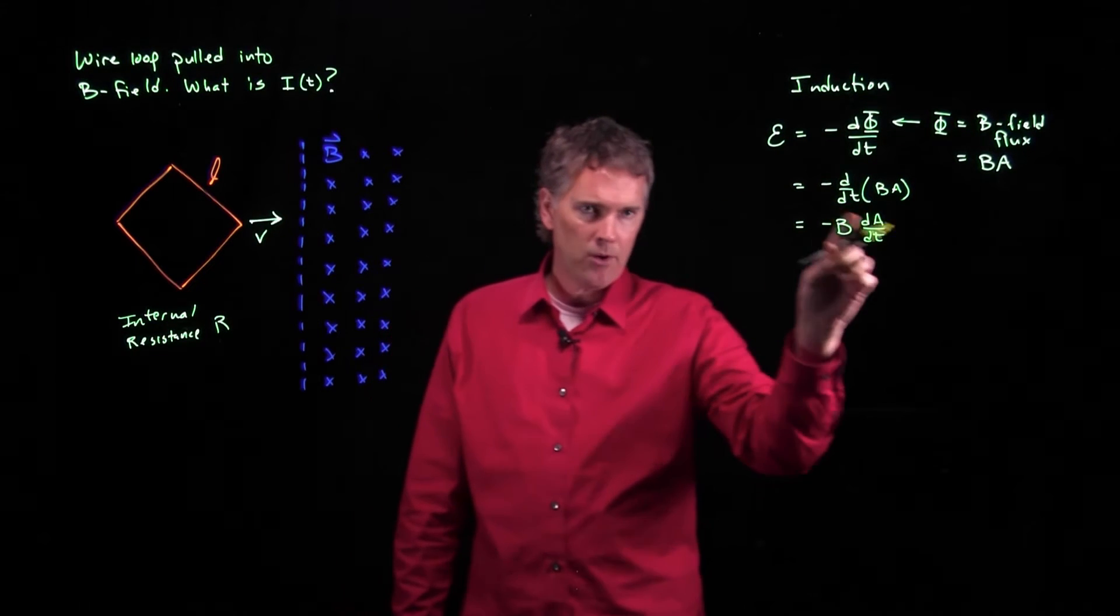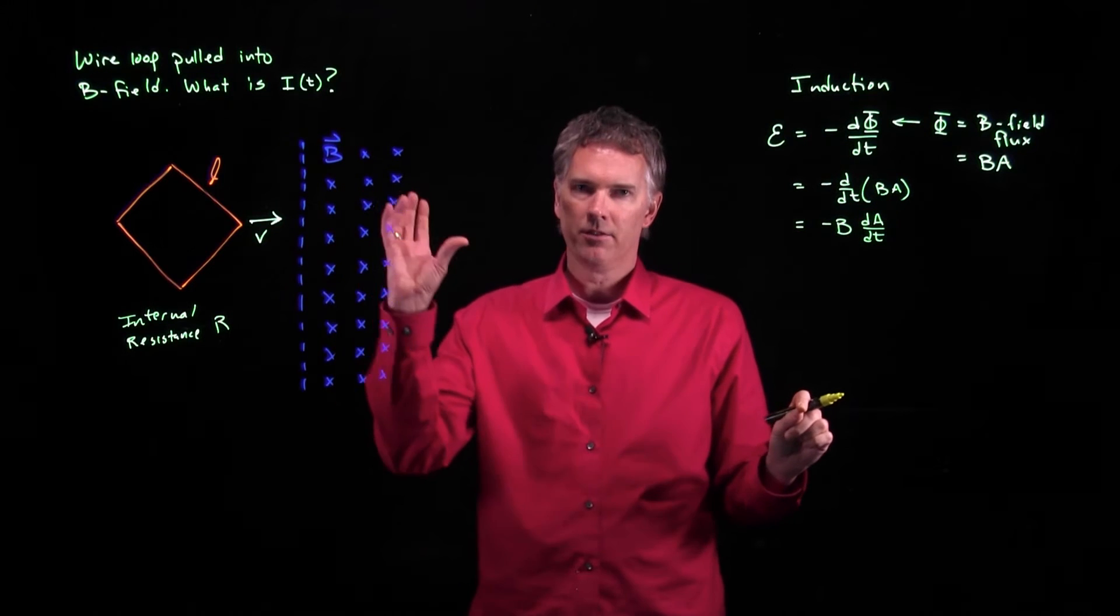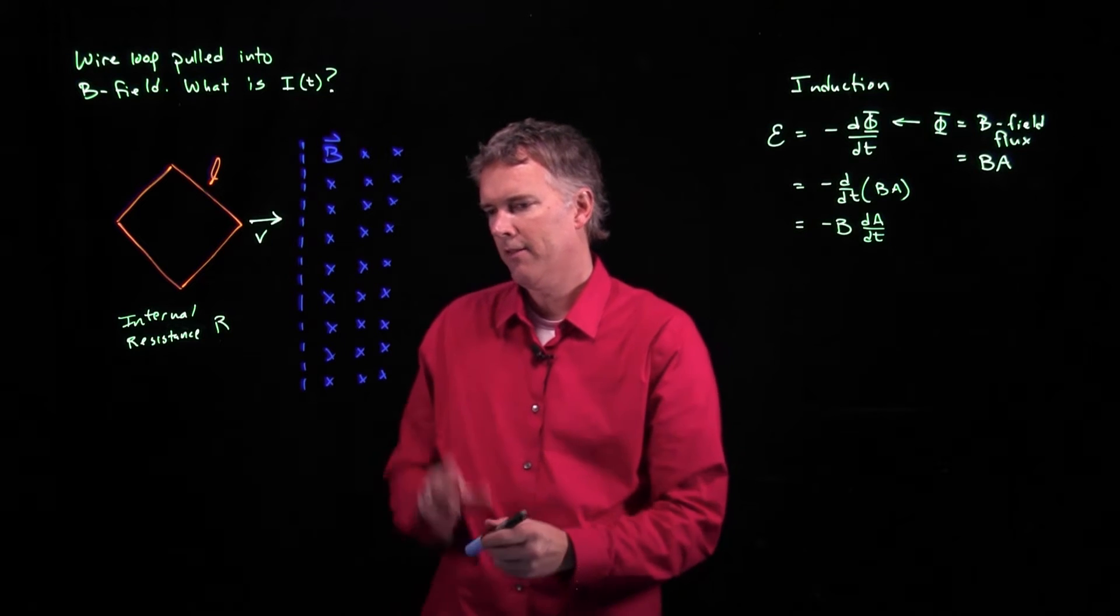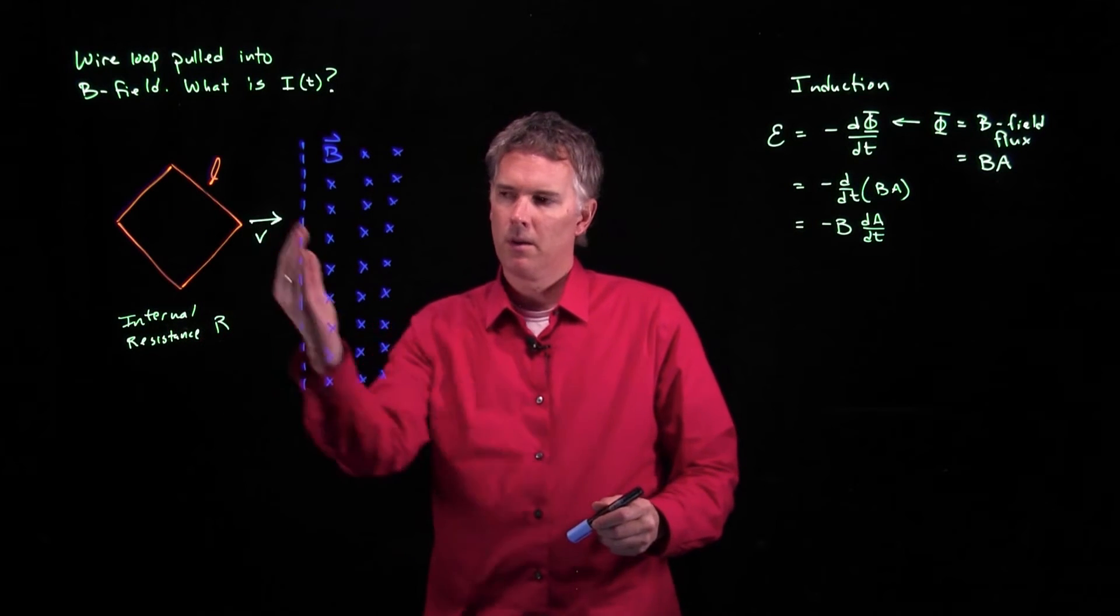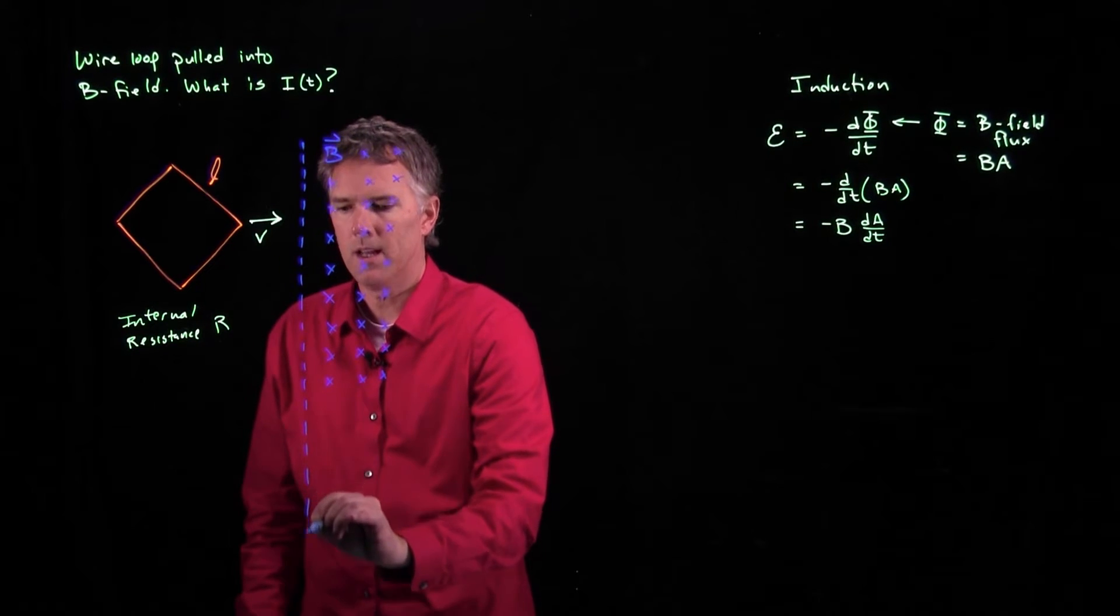So this area is key. We've got to figure out how much area is intercepting B field. Maybe we can do that. If I think about this loop coming across this plane, what can I say?